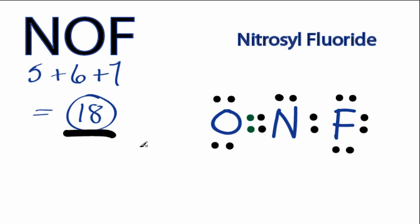If we check the formal charges, we'll see that each atom has a formal charge of 0. So this is the best Lewis structure for NOF. This is Dr. B with the NOF Lewis Structure.